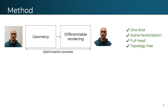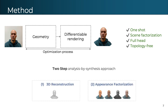Given a single input image, our model is optimized for each scene. We tackle this ill-posed problem by splitting the fitting process into two main steps. We start by reconstructing the implicit surface, and once it has converged, we continue with the second step of appearance factorization.